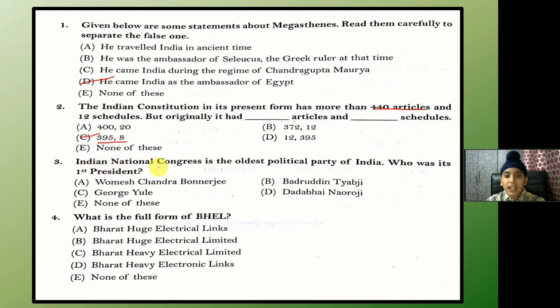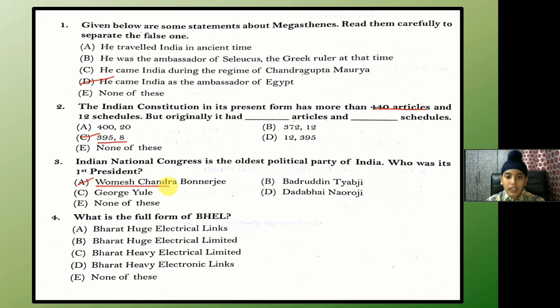Indian National Congress is the oldest political party of India. Who was its first president? The answer is Womesh Chandra Banerjee.